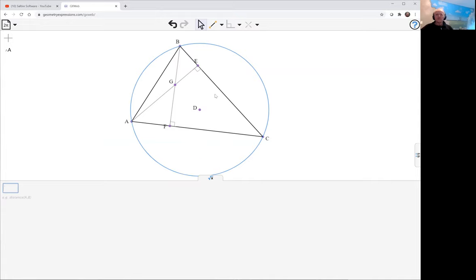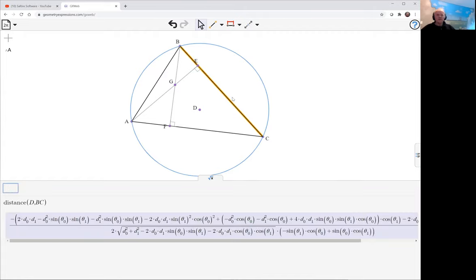we want to show that the distance from D to BC. Let's have a look at it. Well, that's a complicated thing.